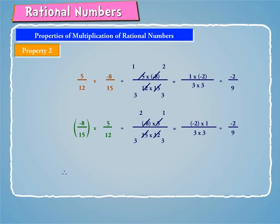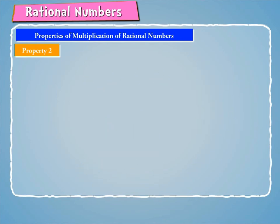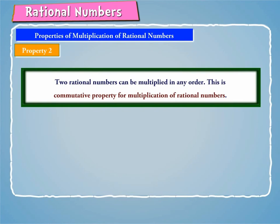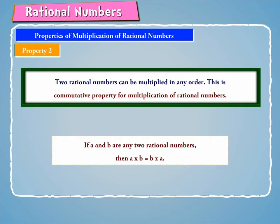Therefore, 5/12 into minus 8/15 is equal to minus 8/15 into 5/12. Hence, two rational numbers can be multiplied in any order. This is the commutative property for multiplication of rational numbers. Thus, if A and B are any two rational numbers, then A into B is equal to B into A.